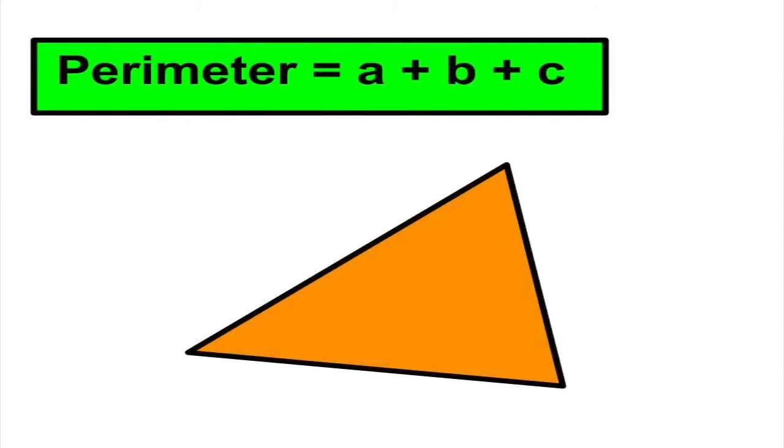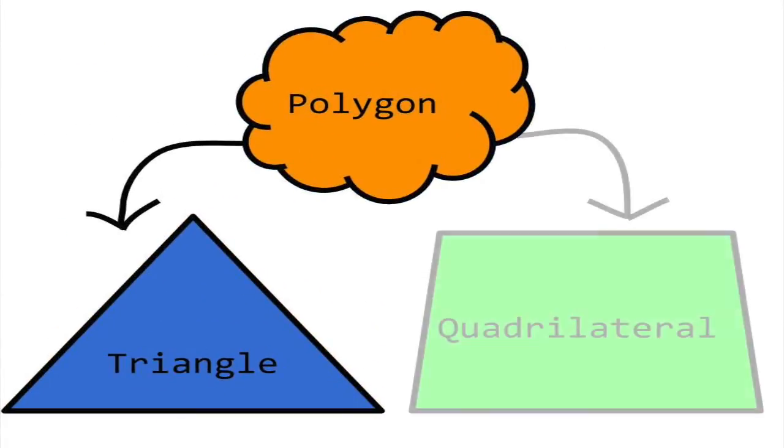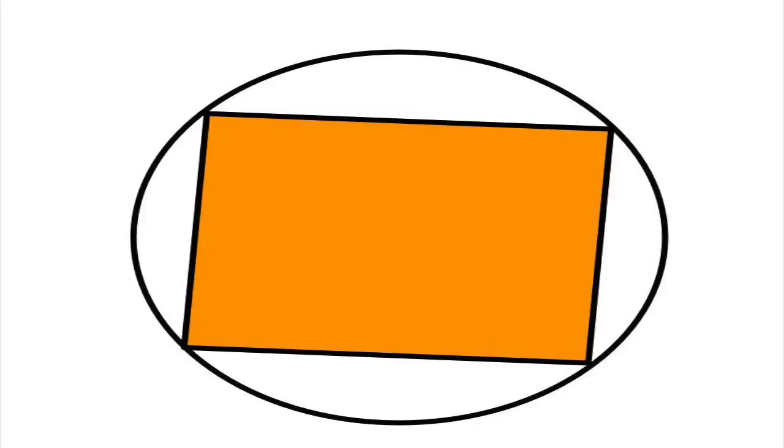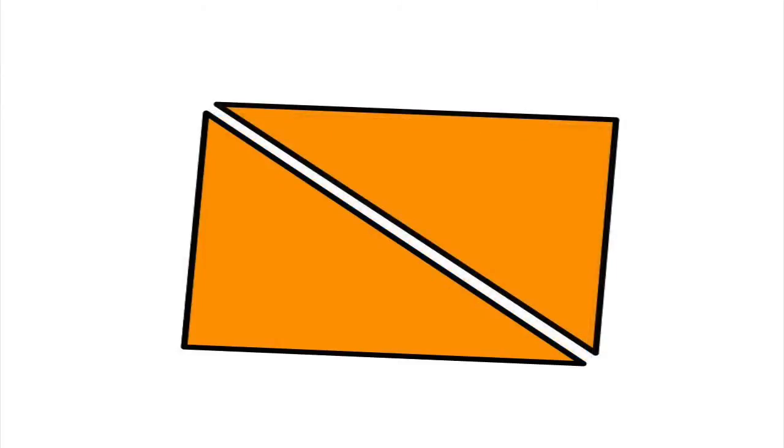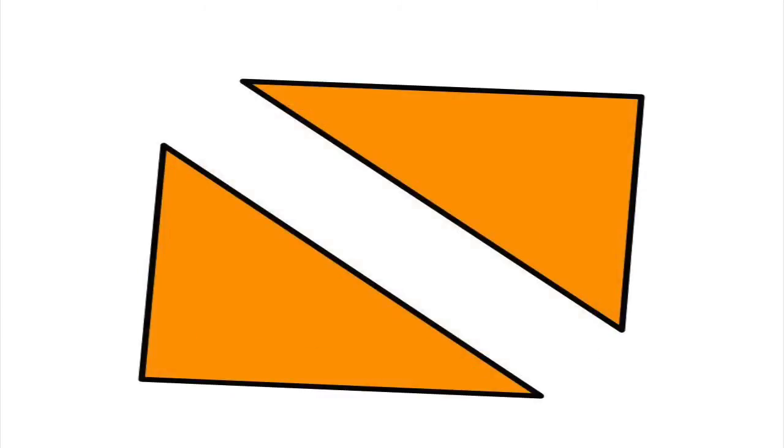To get the perimeter, we simply add up the side lengths. For any cyclic quadrilateral, a quadrilateral that can be inscribed in a circle, we can compute the area by dividing the quadrilateral into two triangles, and then using Heron's formula to compute the area of each triangle.